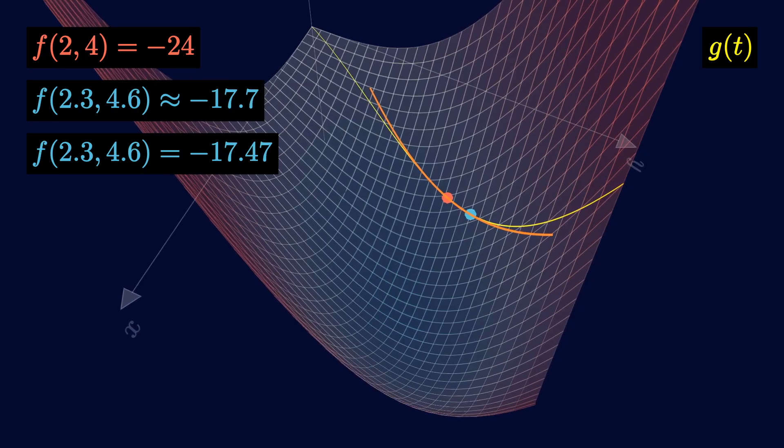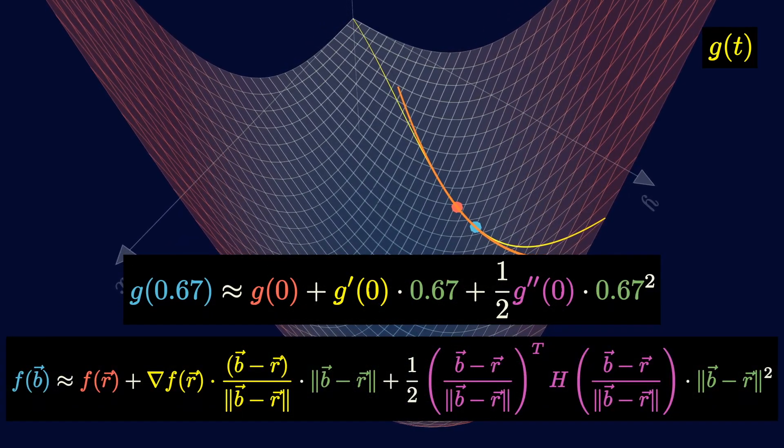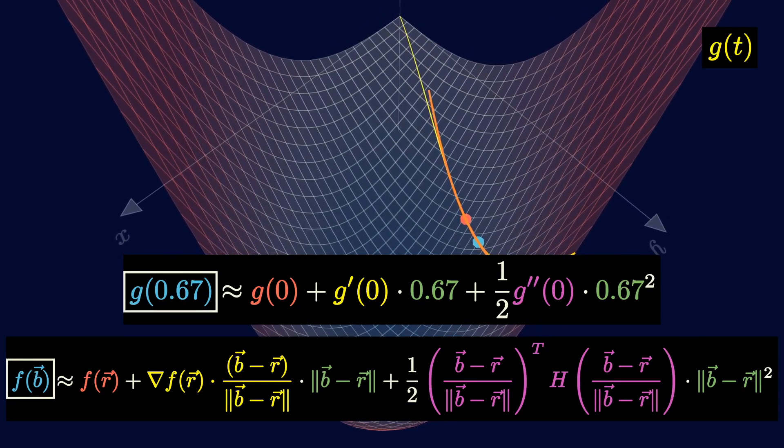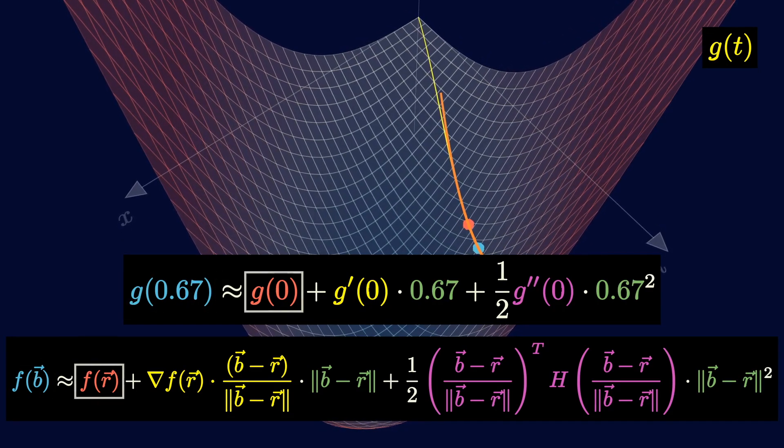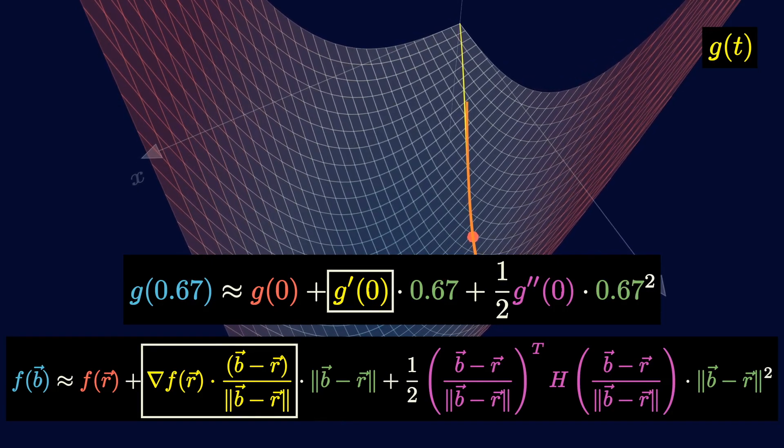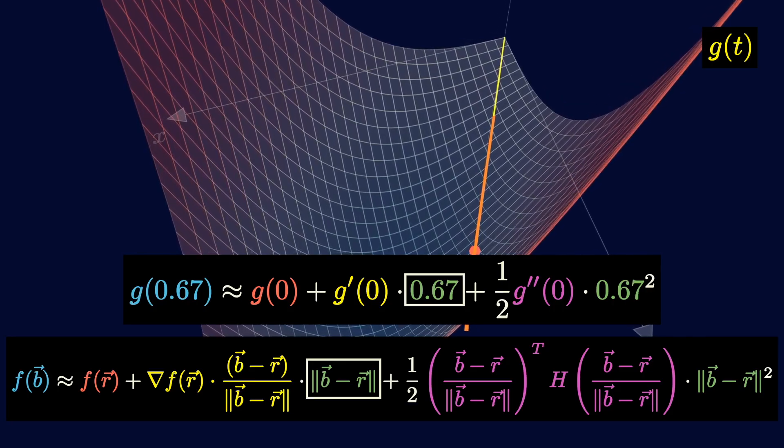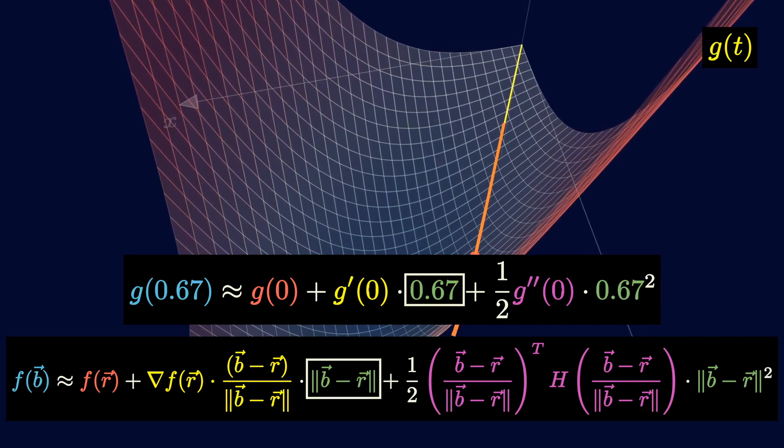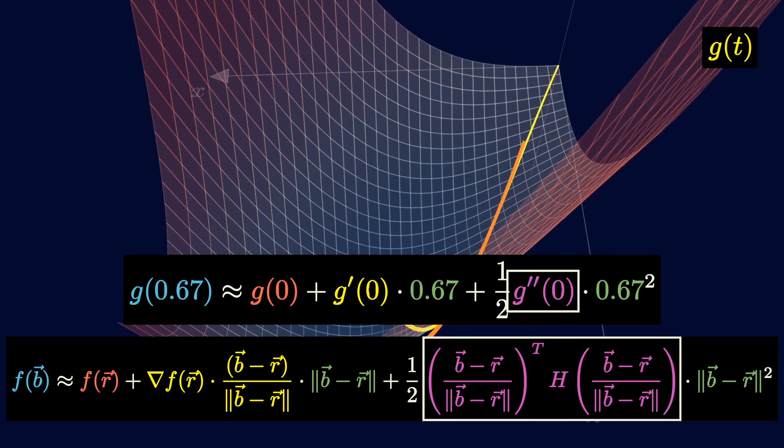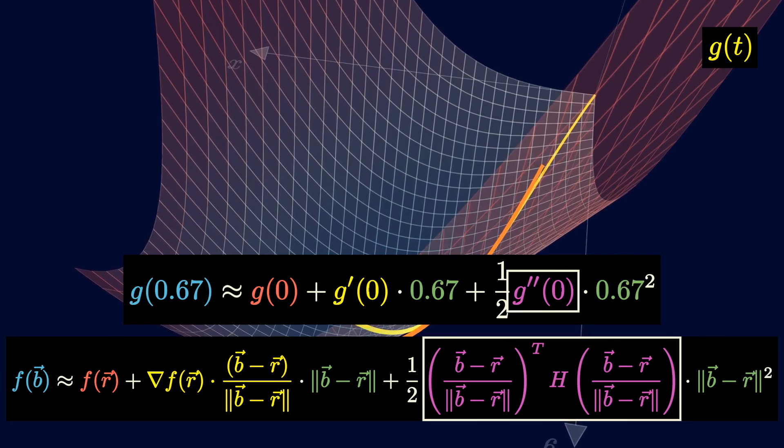Now this estimation we just did can also be generalized to any two points b and r, similar to what we did before. Now this might look a little scary, but I'll break this down for you. g of 0.67 is just the function value at the blue dot, but this point b can be any other point. The same holds for the red point. R is where we do the Taylor expansion, and it can also be some other point. The yellow term is the derivative along the slice of the function at the red point, which is also the directional derivative. The green term is the distance between the two points, which in our example is 0.67, but in general is the distance between b and r. The new term is the purple term. This is the second derivative along the slice of the function. We can get this by multiplying the direction vector with this matrix H, which is the Hessian, with the direction vector. So this is the second derivative analog of the directional derivative. If you're curious, I made a previous video on this, which I'll put in the descriptions below.